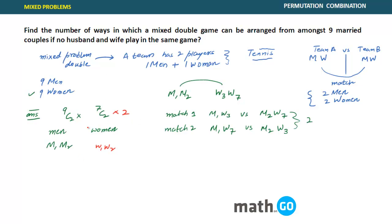The final answer to this problem then becomes 9C2 × 7C2 × 2. This is the answer we were looking for.